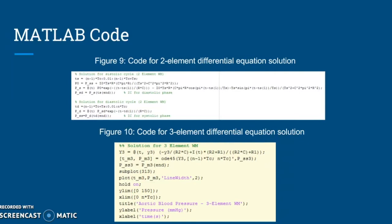Figure nine shows the solution to a differential equation found by the two-element model. Since the model is simple, the solving was done by hand using differential equation techniques. There are two differential equations: one for systole and one for diastole. The differential equation for systole is solved using an integrating factor. The differential equation for diastole is more simple since blood flow I(t) is set to zero, making it a homogeneous differential equation.